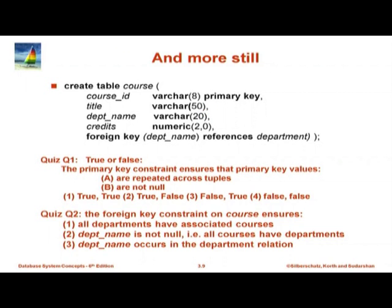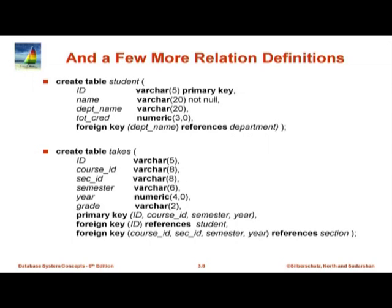If you see here, course has a foreign key department_name referencing department. You would assume that a course had better have an associated department, so it makes sense for the foreign key to be NOT NULL. However, there are some cases where you do want a foreign key declaration but null may be an option. For example, in most colleges in the US students are not admitted to a department when they join the university. They are expected to select a department after a couple of years. In that case department_name could be null indicating they have not yet chosen a department. So a foreign key could be null in certain situations and SQL allows it — if it is not null it had better be present in the referenced relation.